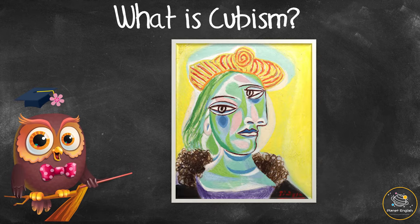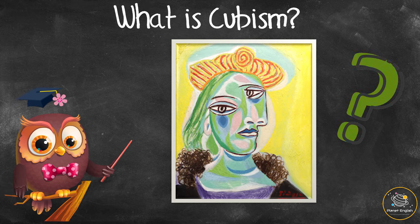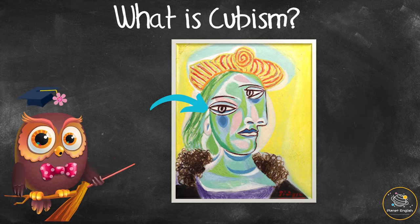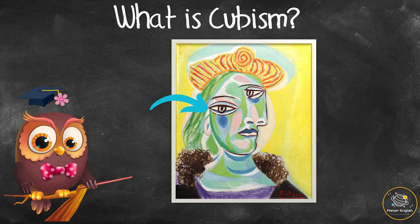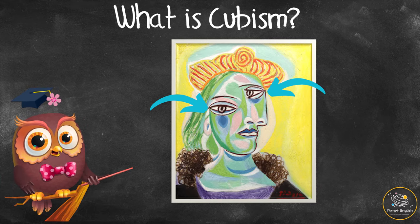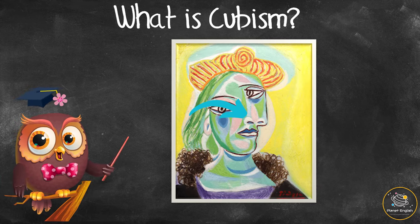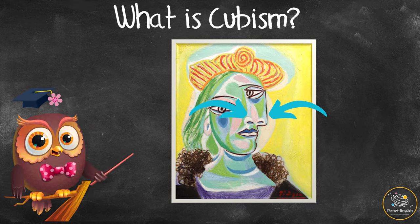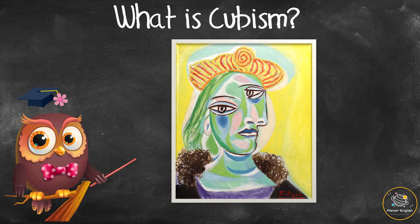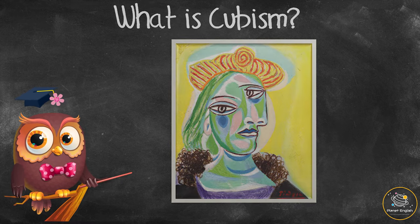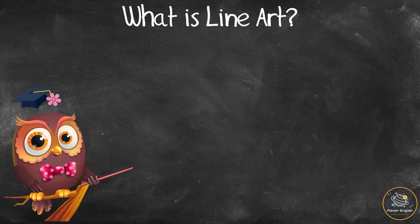Look at this painting — what side of the face can we see? We can see the left eye from the front and the right eye from the side. We can also see the nose from the front and the side. Look at the colors — they also break up the face into different shapes.